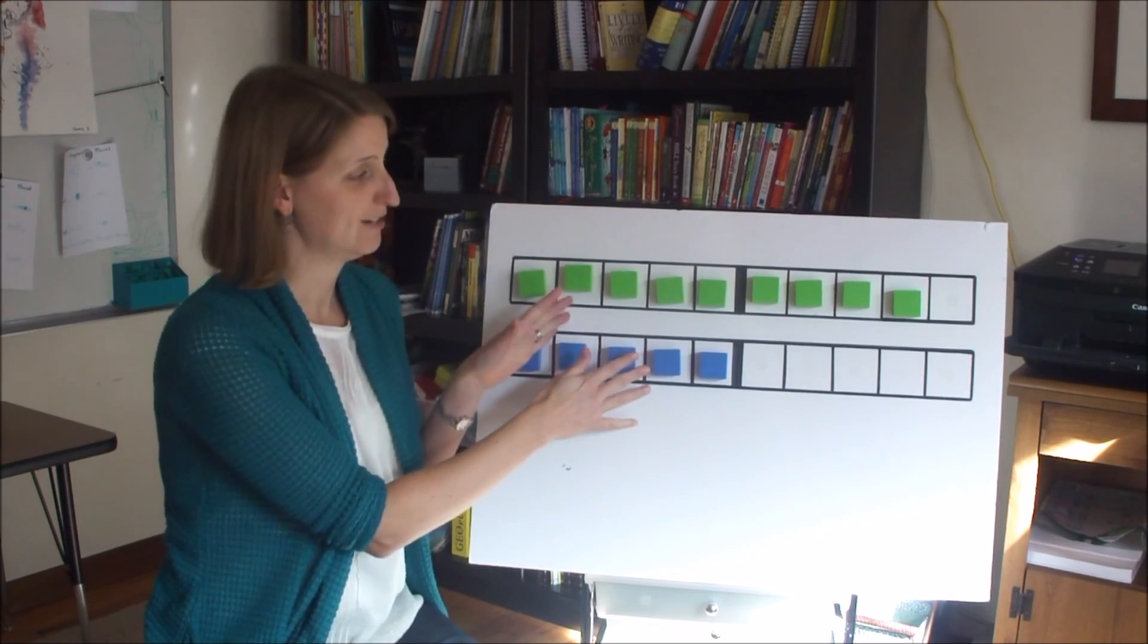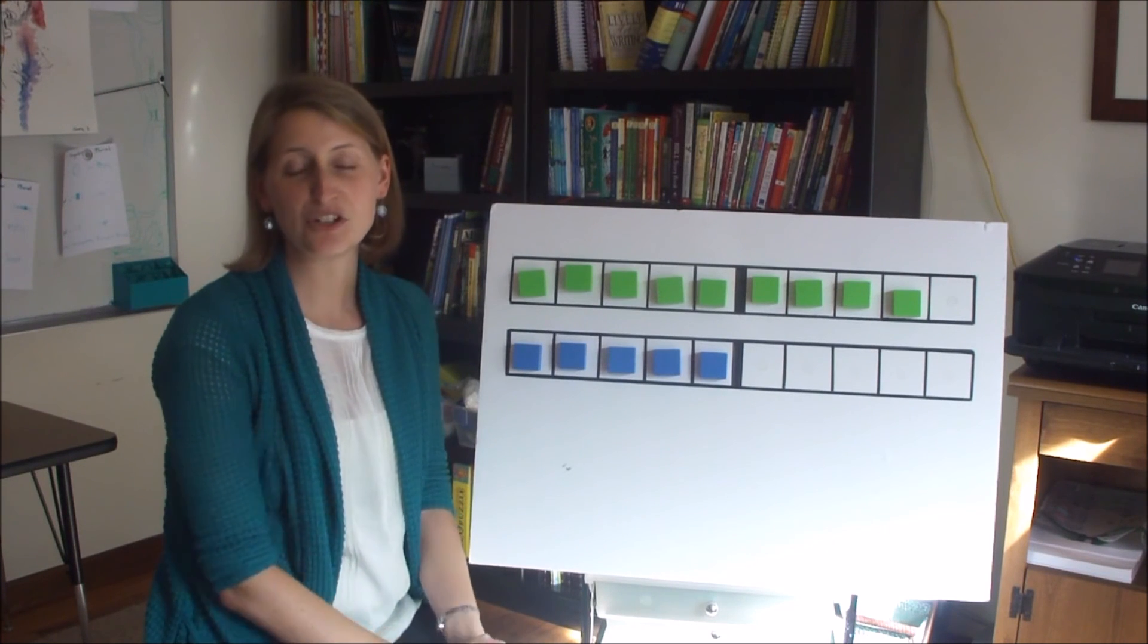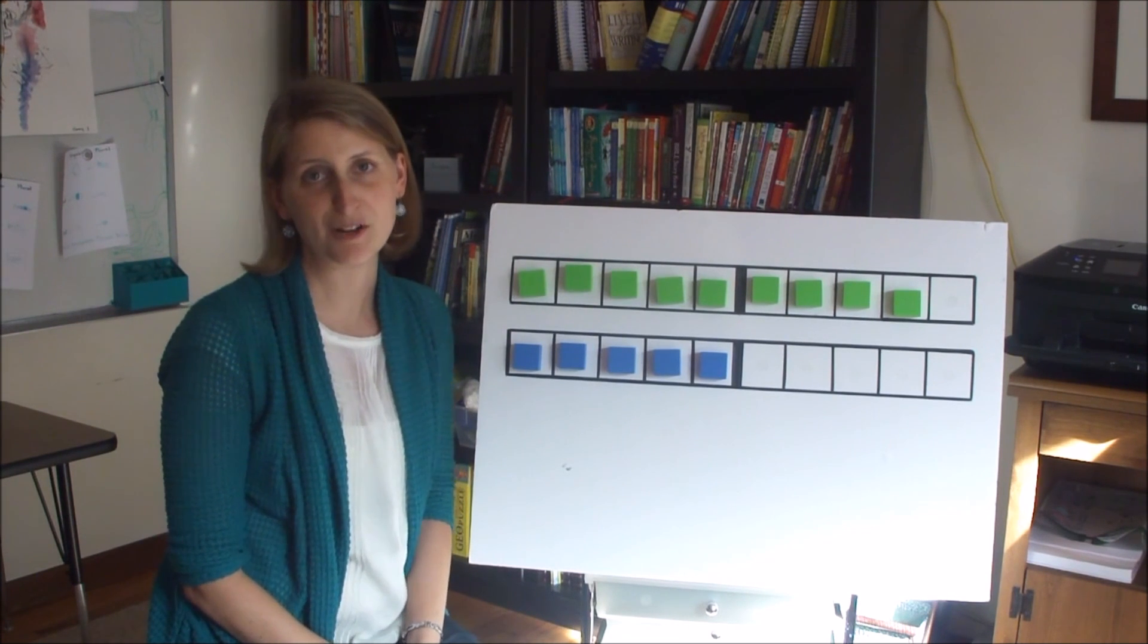So the 3 steps are hands on, then hands off, and then eyes closed to help your child use manipulatives well but keep them from becoming a crutch.